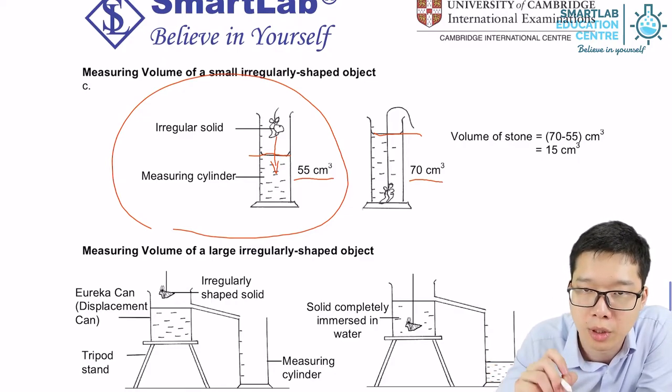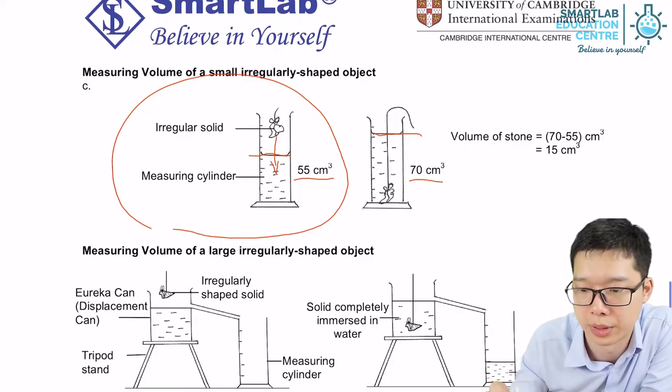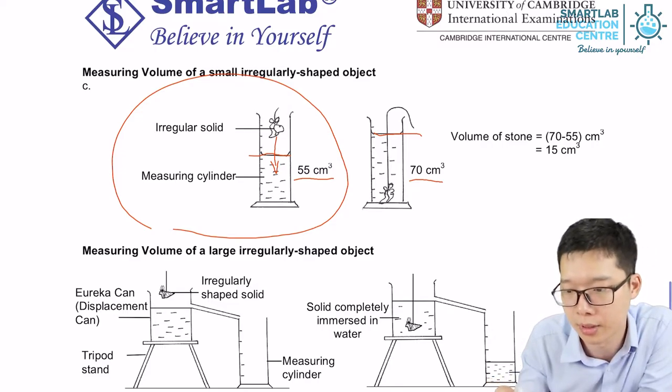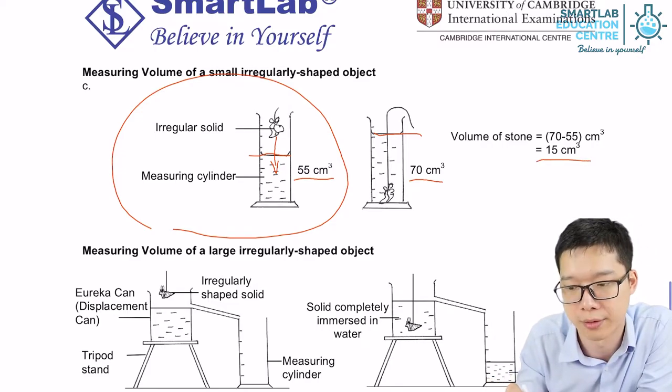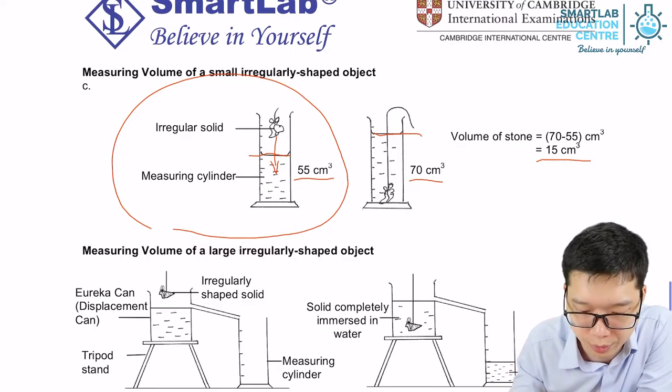And then the volume of the irregular shaped stone will be a difference between the two readings. Make sense? So it's 70 minus 55, which gives us 15 cm cubed.